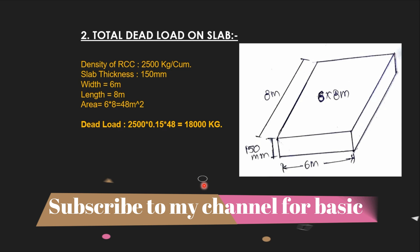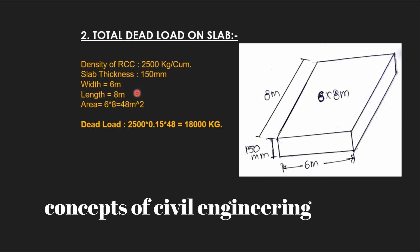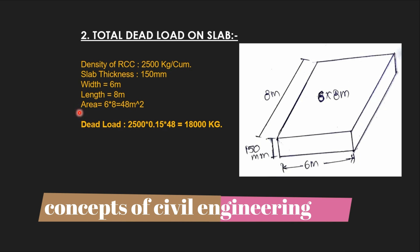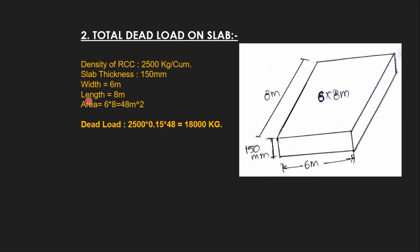We know the thickness of slab, we know the width of the slab, and we know the length of the slab. So area can be found out by multiplying width and length: 6 multiplied by 8, which is equal to 48 meters square. If you multiply this area with thickness of the slab, then you will get the volume. Here, 0.15 multiplied by 48, this is the volume of the slab.